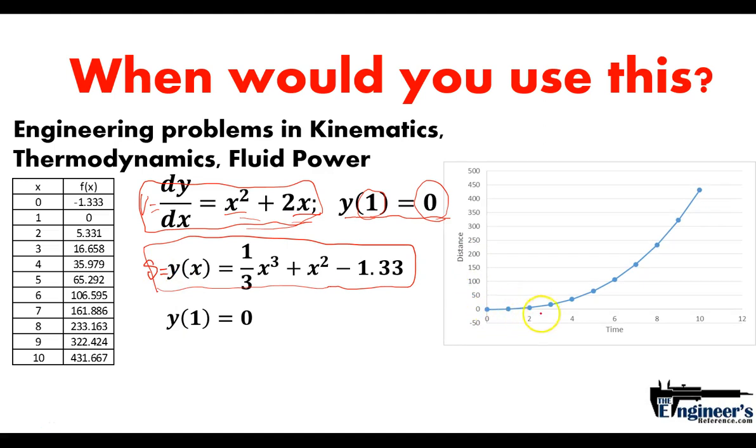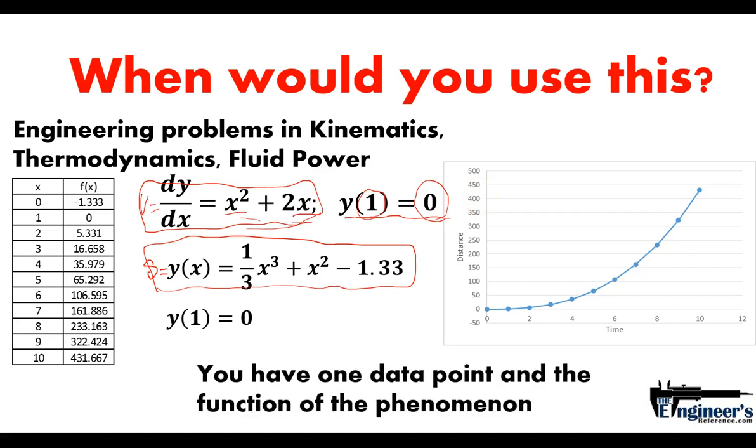You've got a chart of your time - your independent variable - and this is how far you've traveled. You can see this is a pretty fast-moving object, depending on what type of units we have. I didn't put any units on here because I wanted to keep it generic, but it travels very fast. All of this is based on one data point - this initial condition - based on the function of that phenomenon. Without that data point, we wouldn't have been able to come up with a particular solution for this particular object.